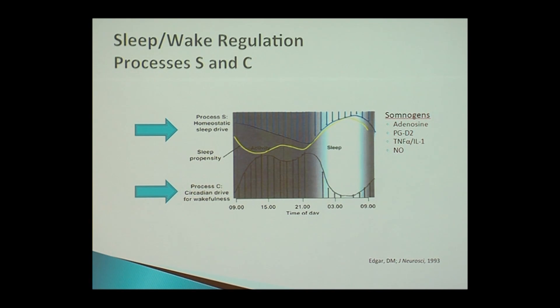We now have them a bit more defined: adenosine, prostaglandin D2, tumor necrosis factor alpha and interleukin 1, as well as nitrous oxide.